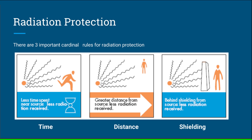Radiation protection: There are three important cardinal rules for radiation protection — time, distance, and shielding. Less time spent near the source means less radiation received. Greater distance from the source means less radiation received. Behind shielding from the source means less radiation received.